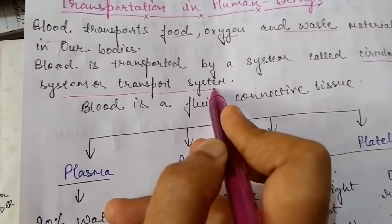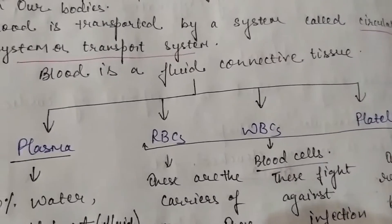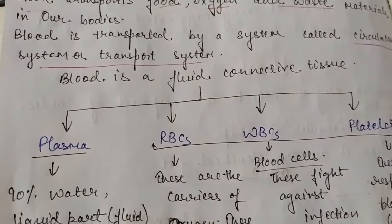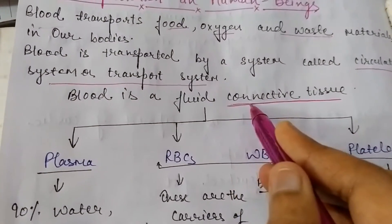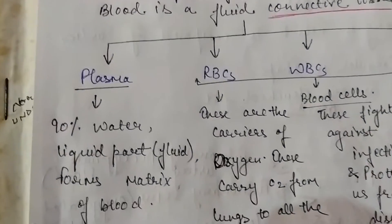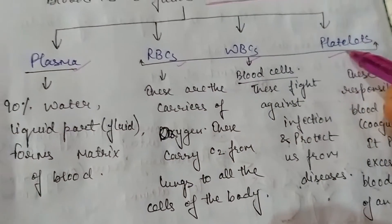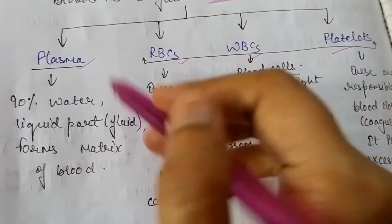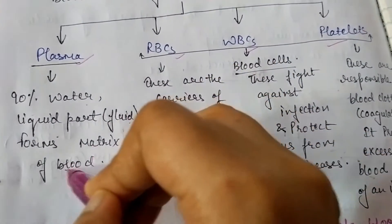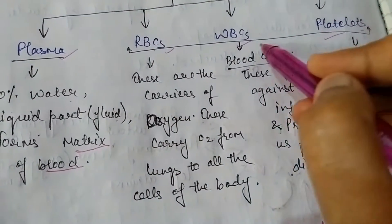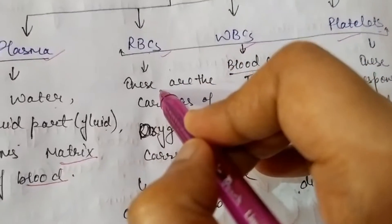As you have read in ninth class, blood is a fluid connective tissue. Blood is made up of four components: plasma, RBCs, WBCs, and platelets. Plasma is 90 percent of blood, of which 90 percent is water. It is the liquid part and forms the matrix of blood. RBCs, WBCs, and platelets are the blood corpuscles.